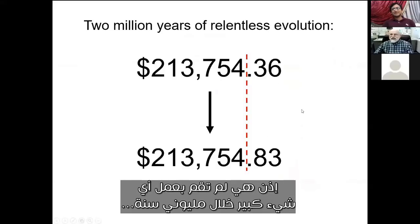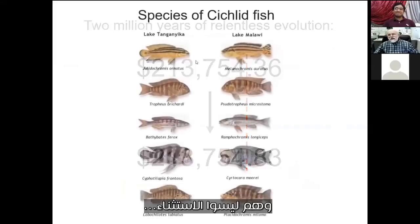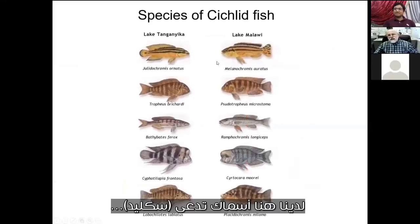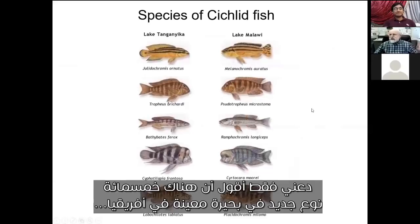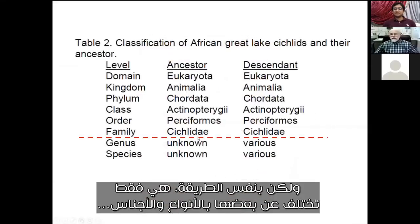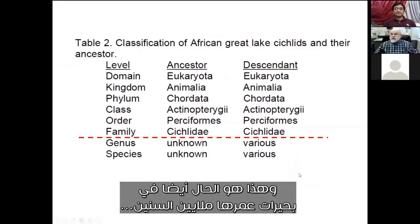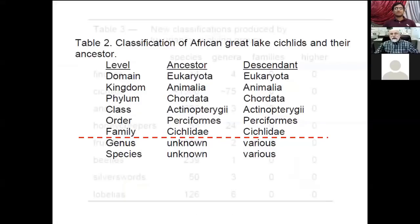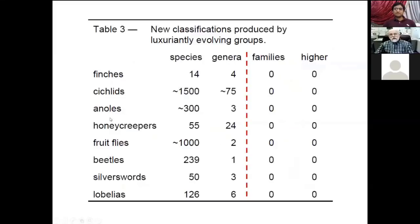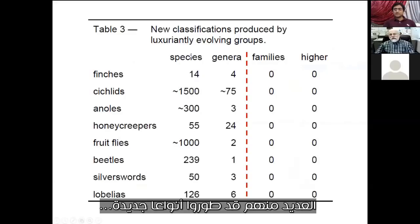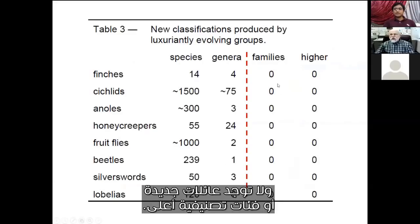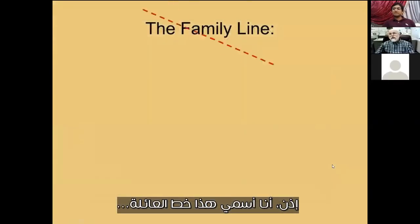It hasn't done much of anything, and that's over two million years — and they're not the exception. There are fish called cichlids; there are 500 new species in a particular lake in Africa called Lake Victoria, but in the same way they only differ from each other in species and genus. All the other things are the same, and this is also the case in lakes that are millions of years old. If you look at anoles, lizards, honeycreepers — birds in Hawaii — fruit flies in Hawaii, a lot of them have developed new species, some new genera, and no new families or higher.